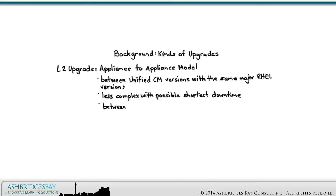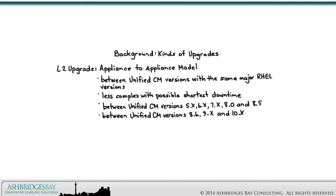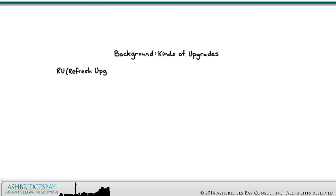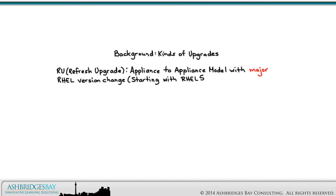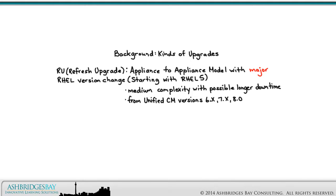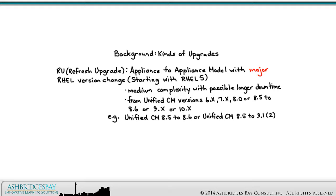L2 upgrades cover versions 5.x, 6.x, 7.x, 8.0, and 8.5, or from 8.6 to 9.x or 10.x — for example, an upgrade from 7.1.5 to 8.5, or from 8.6 to 9.1.2. Refresh upgrades are upgrades from one version of the appliance model to another running on different major releases of Red Hat Enterprise Linux. These upgrades are simpler than W1 upgrades but a little more complicated than L2 upgrades. These cover upgrades from version 6, 7, 8.0, or 8.5 to versions 8.6, 9, or 10 — for example, from 8.5 to 8.6, or from 8.5 to 9.1.2.